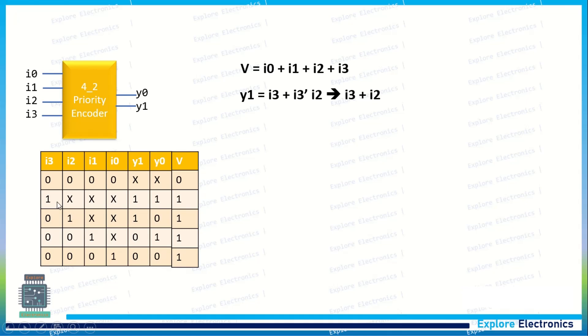So it is i3 + i3̄·i2. So we can simplify this expression using the standard formula: a + ā·b can be written as a + b. So here also, i3 + i3̄·i2 can be written as i3 + i2.